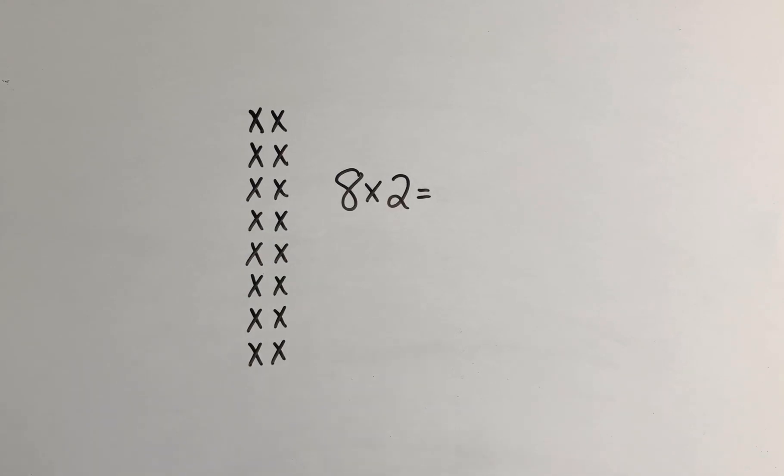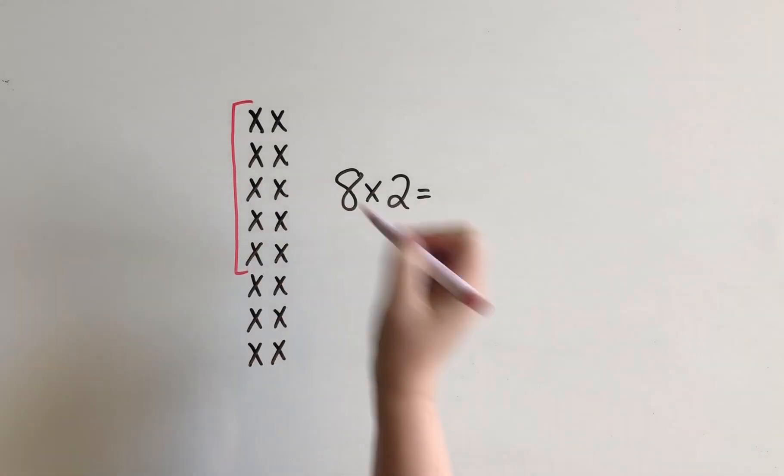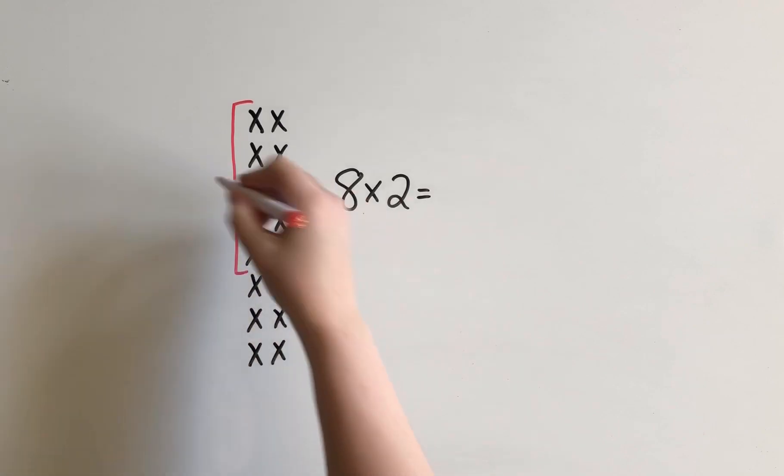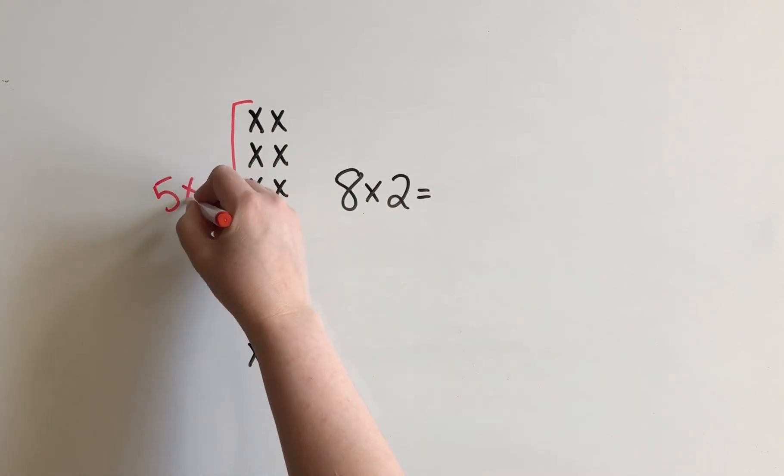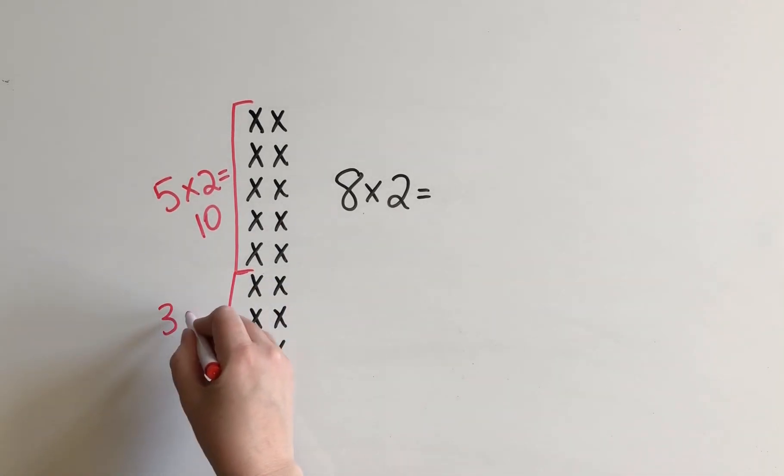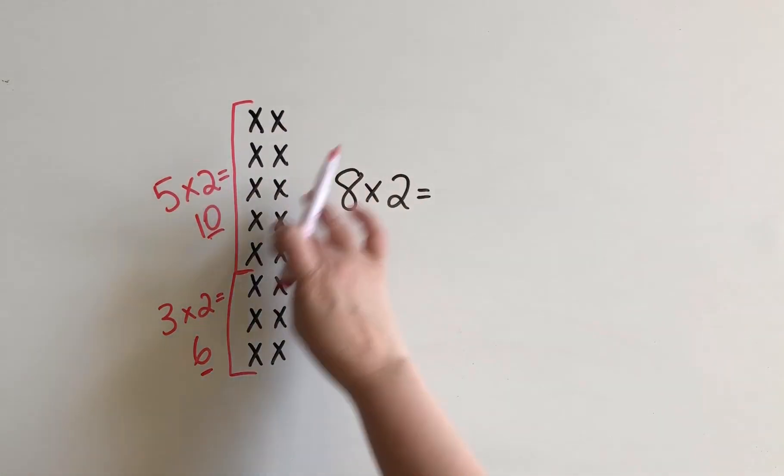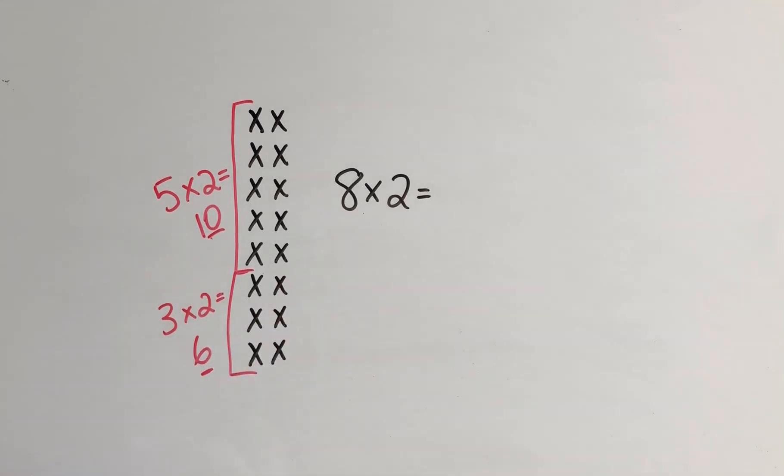Maybe I could figure out what 5 groups of 2 is. 5 groups of 2 I know is 10. And then another 3 groups of 2 is 6. So I know that now there's going to be 16 altogether because I just add the number of chairs in each of those smaller groups. So that's another way that I could figure out the 8's facts.